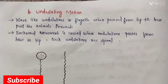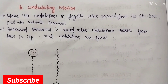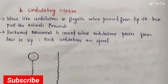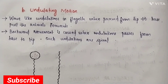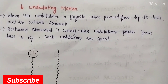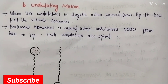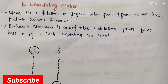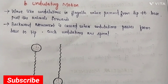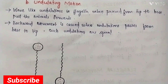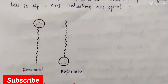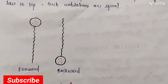Undulating motion: wave-like undulations in the flagellum, when proceeding from tip to base, pull the animal forward. Backward movement is caused when undulations pass from base to tip. Such undulations are spiral. This is the figure of forward and backward undulations.